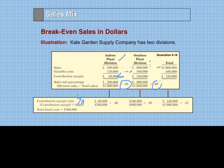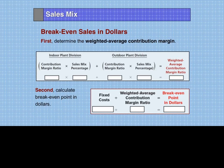To do the break-even with sales dollars, we need the contribution margin percentage. For indoor, $80,000 divided by total sales gives 40%. For outdoor, $240,000 divided by total sales gives 30%. So on a weighted average basis: the contribution margin ratio of 40% times the sales mix of 20%, plus the contribution margin ratio of 30% times the sales mix of 80%, gives us a weighted average contribution margin ratio of 32%.